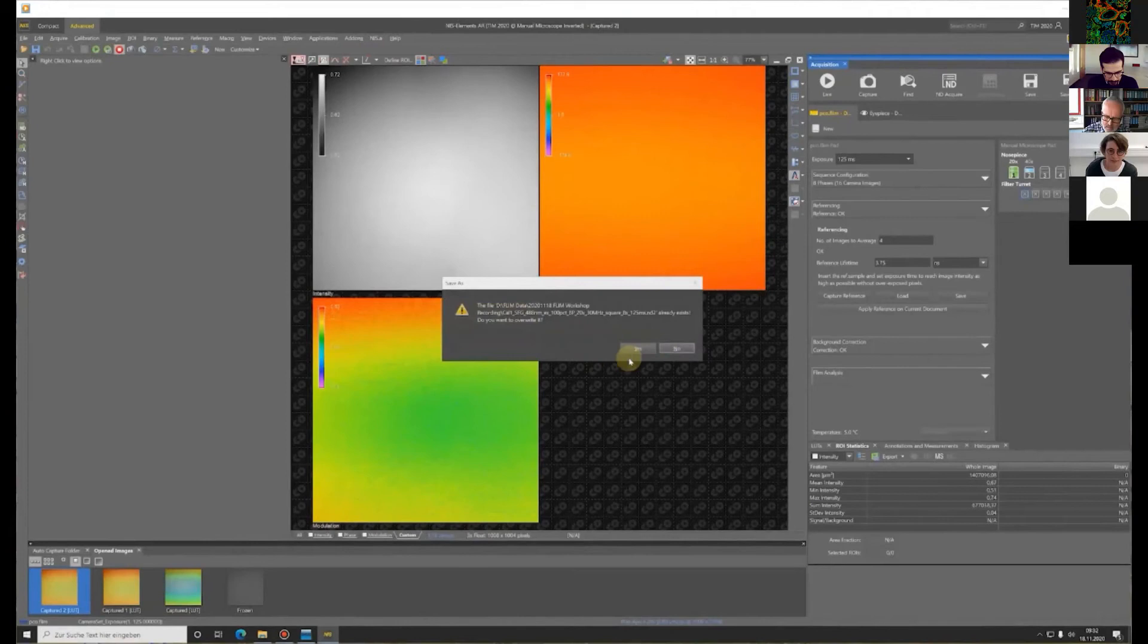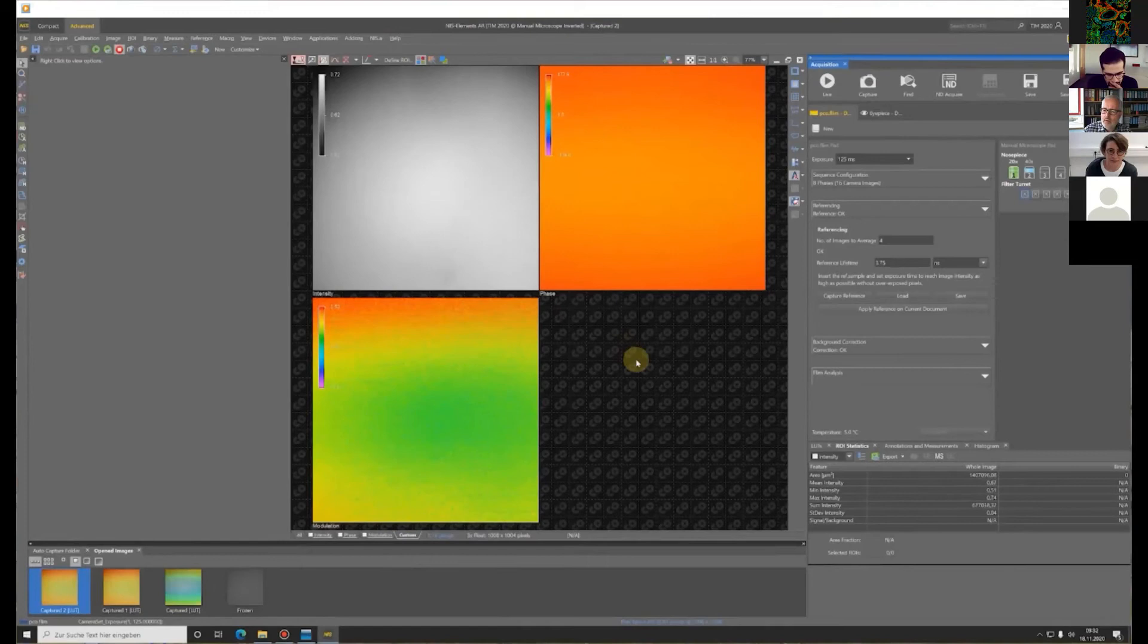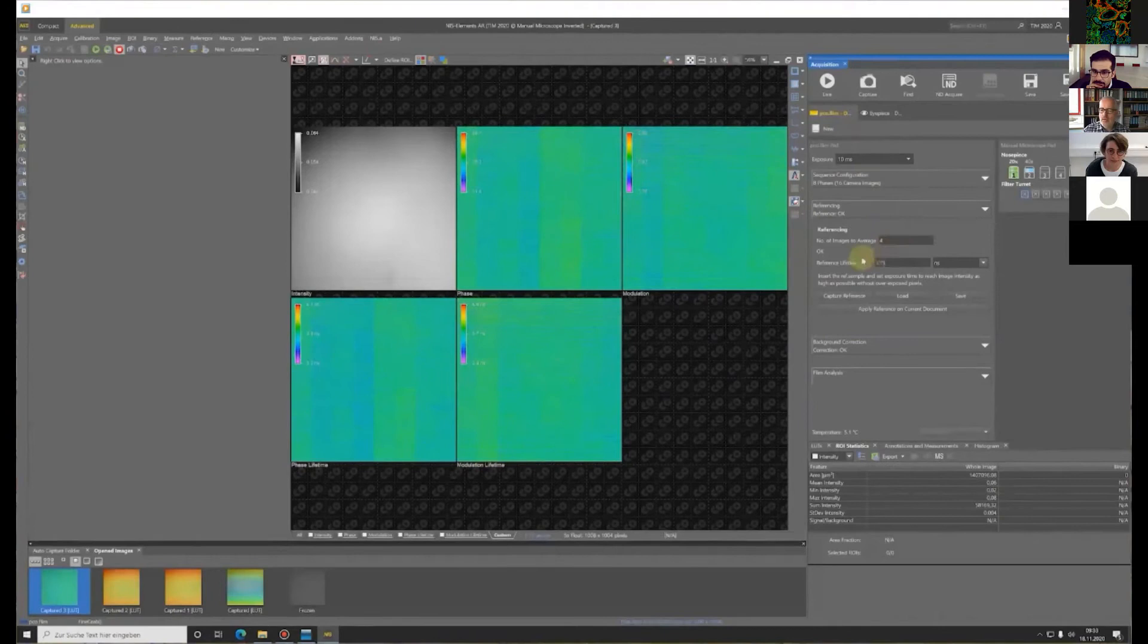When the reference measurement is ready, it's always a good idea to store and save the results. I'm always using different parameters for the file names to have a better identification of what I've done. Therefore, I have here the excitation wavelength, the filter and the objective modulation frequency and the sequence parameters. Since I now have referenced, I usually, for checking if the reference was okay or if there hasn't been any problems, I will use the signal to a tenth and do another capture.